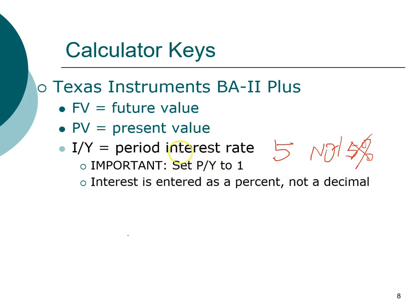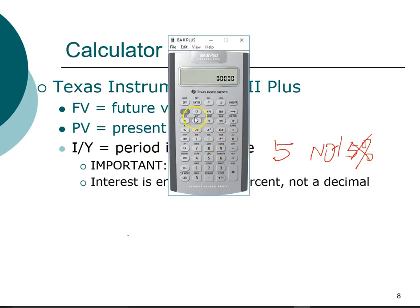Another important thing is to set the P/Y register to one. The periods-per-year (P/Y) function is a second function, so to access it you first press the Second key — you'll see 'second' on the display — then press this register. If P/Y shows one, you're all set. If it shows 12, press the number one and then press Enter, and it is all set.